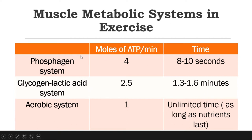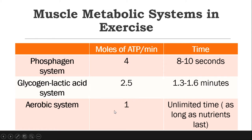So during the onset of exercise, the body first uses the phosphagen system. When the phosphocreatine in the phosphagen system is depleted, the body uses its glycogen stores — converting glucose to pyruvic acid, then pyruvic acid becomes lactic acid, which supplies energy for the muscles. The third, the aerobic system, produces less ATP per minute but can be used for unlimited time. This means the aerobic system is used for endurance activities — like marathon running, which lasts for hours.